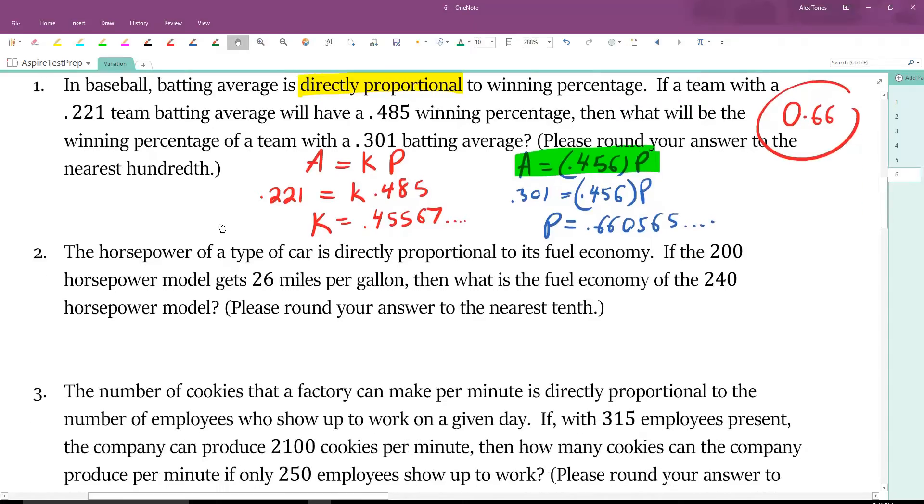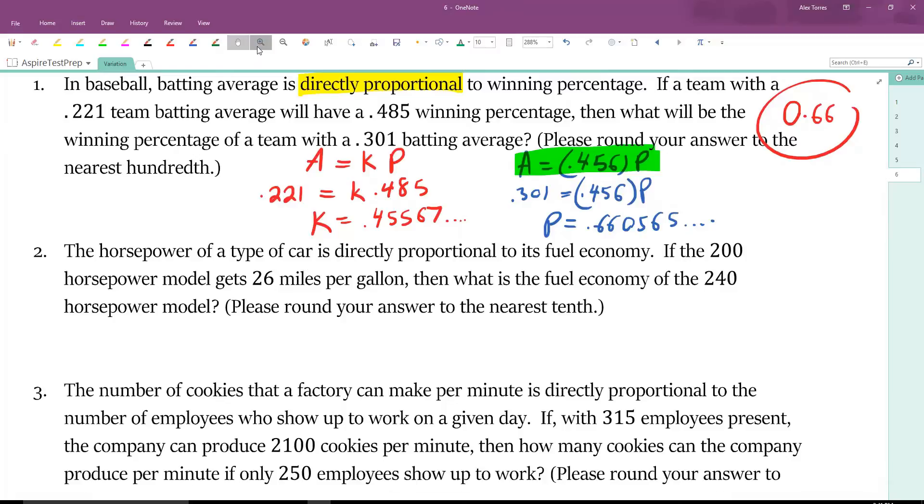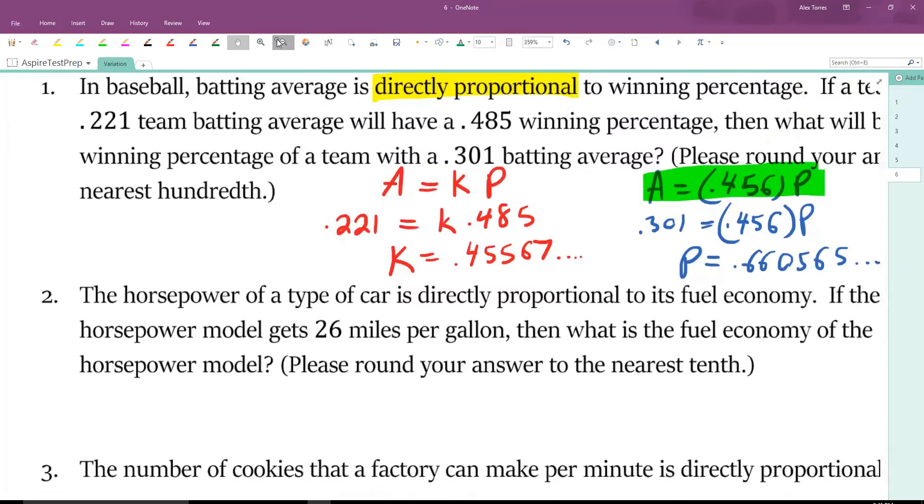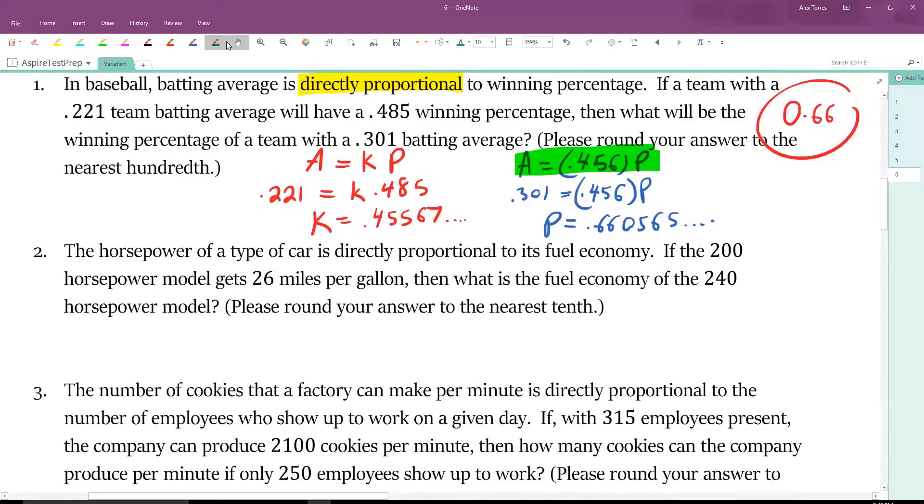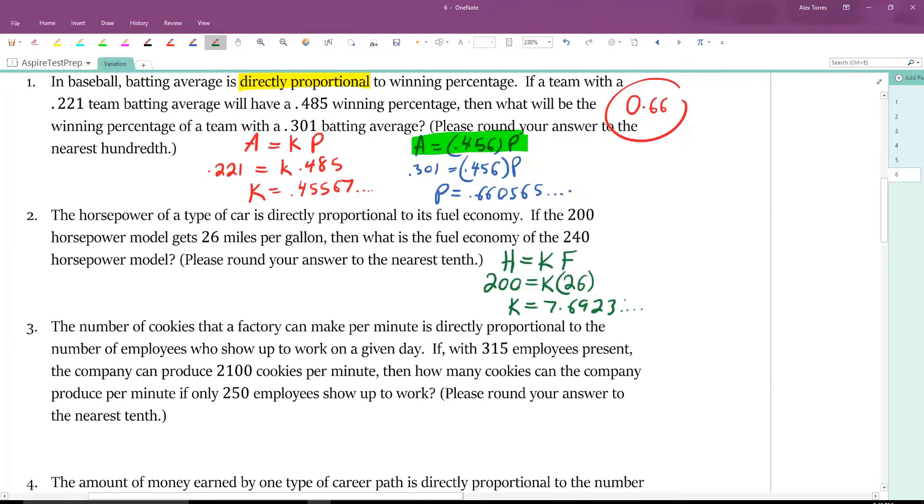Going over to number two, the horsepower is directly proportional to the fuel economy. The horsepower, which we'll call H, is directly proportional to the fuel economy. 200 horsepower gets us 26 miles per gallon in fuel economy. We can solve for K by dividing both sides by 26. 200 divided by 26 is 7.6923, and it goes on. Now that we know K, we can rewrite our original equation. H equals that number times F.